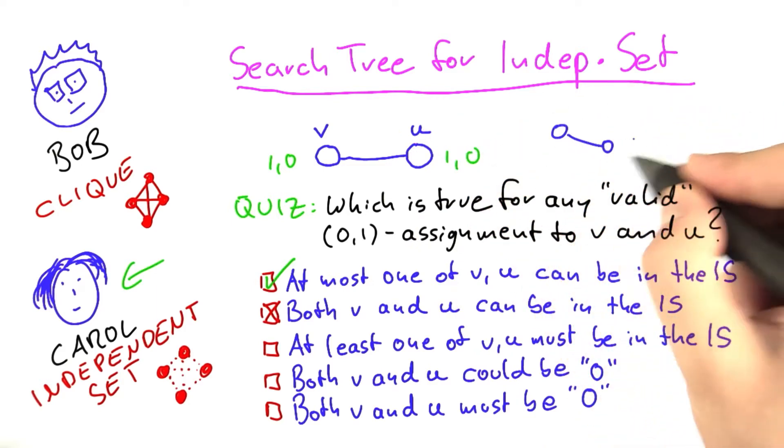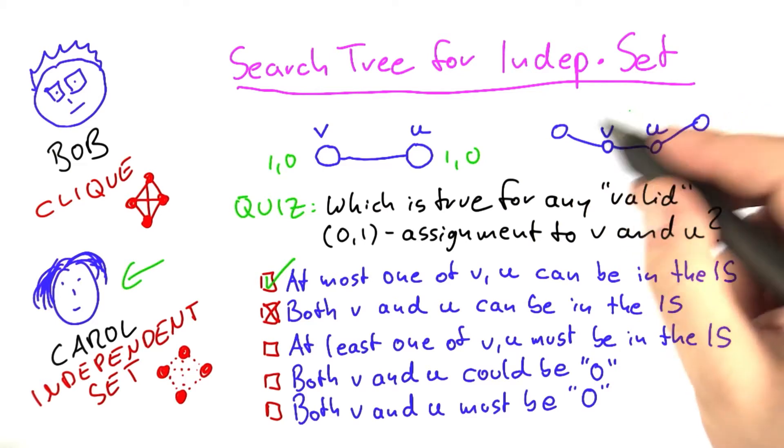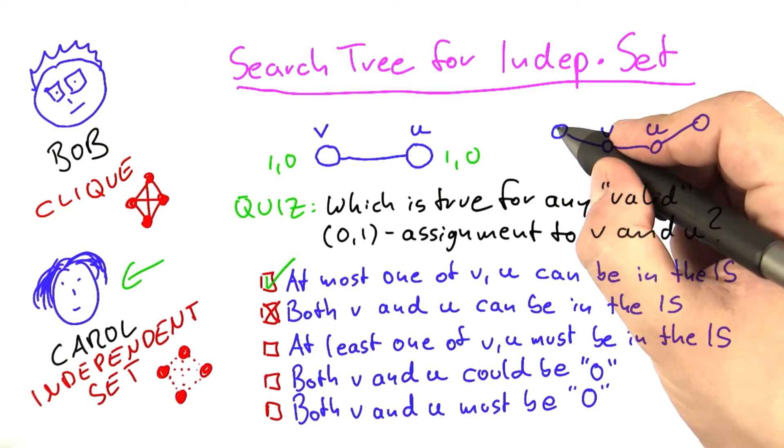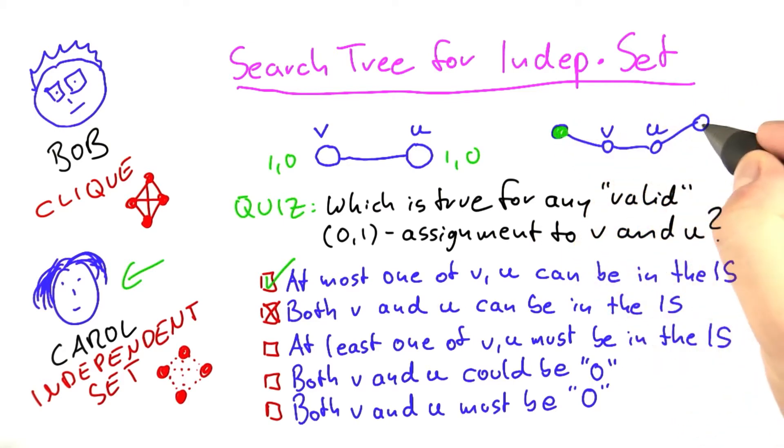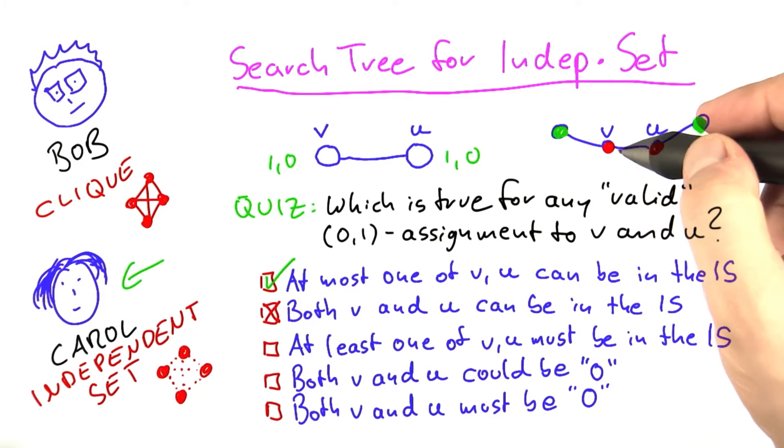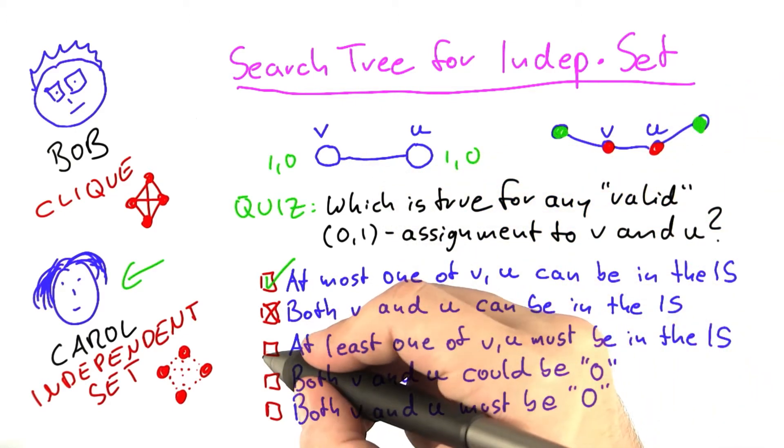Say we have a very small network like this one here. Here you have v, here you have u. Then this network here has an independent set of size 2. Actually, it has a number of independent sets of size 2, but there's also one independent set of size 2 where v and u are both excluded. This is a bit different from vertex cover because you can actually have the case that both vertices are not part of the set even though they are connected by an edge. So this is false.